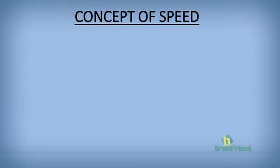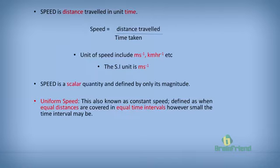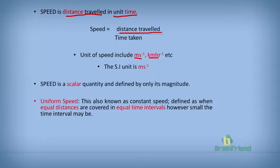Let's look at the concept of speed. Speed is distance traveled in unit time. Mathematically, speed is distance traveled divided by time taken to make the journey. The unit of speed includes meters per second, kilometers per hour, and centimeters per second. The SI unit for speed is meters per second.